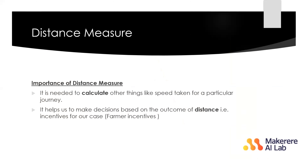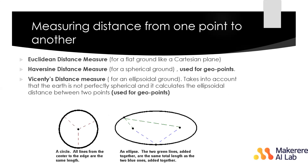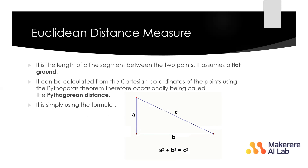The next part is distance measure. Its importance is that it is needed to calculate other things like speed for a particular journey, and it helps make decisions based on the outcome — for example, the incentives given to farmers for crowdsourcing activities. For measuring distance from one point to another, you can use Euclidean distance or the Haversine formula. Euclidean distance assumes flat land, so you cannot use it to measure distance between two points on Earth because Earth is not flat.